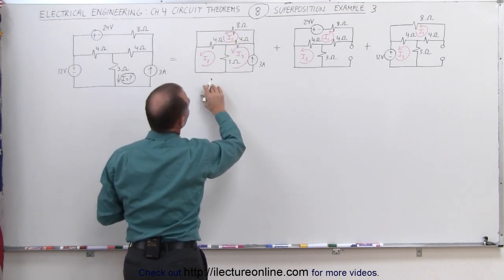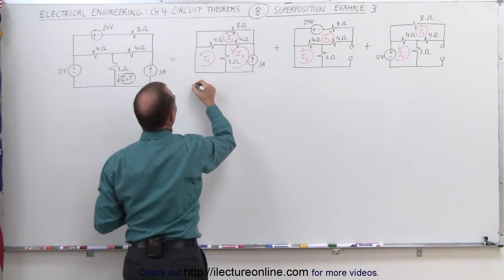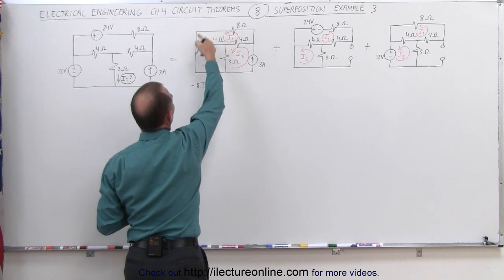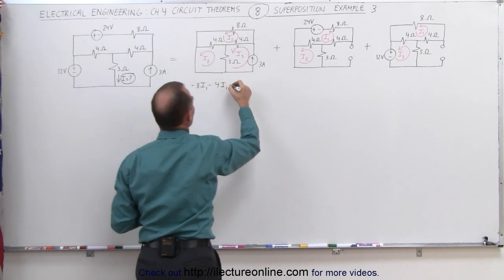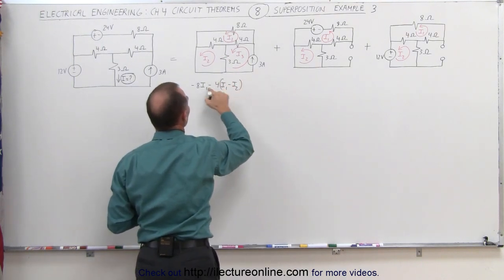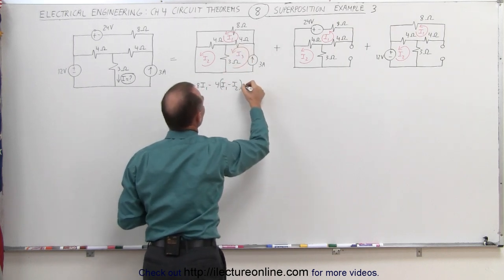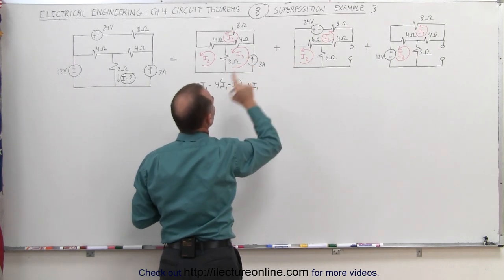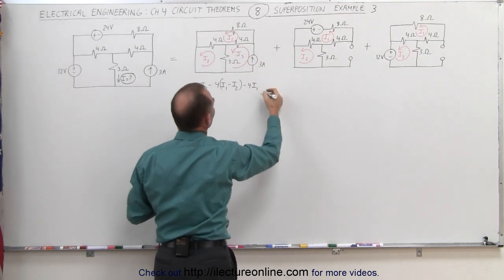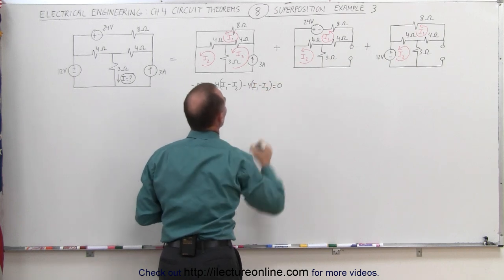For I1, starting at this corner right here, we have a drop of minus 8I1. Coming around here, we have a drop of minus 4I1, but we have an I2 in the opposite direction — that would be minus I2. Notice that this negative will make that into a positive. And then coming around here, we have a minus 4I1, and we have to subtract I3 from it — yes, because it's in the opposite direction — minus I3, and that adds up to zero.